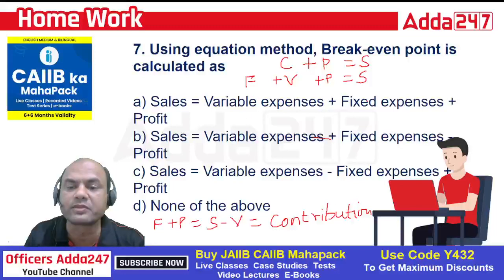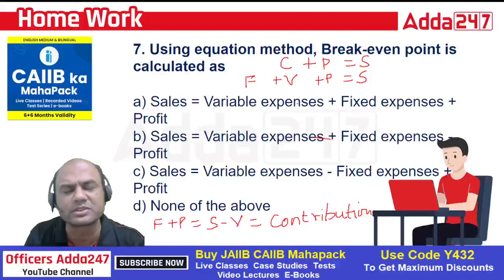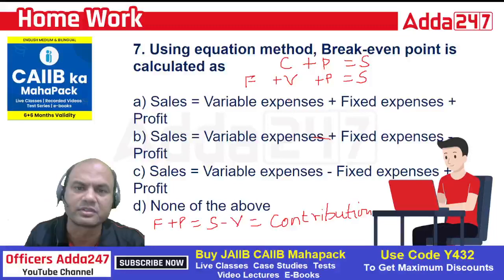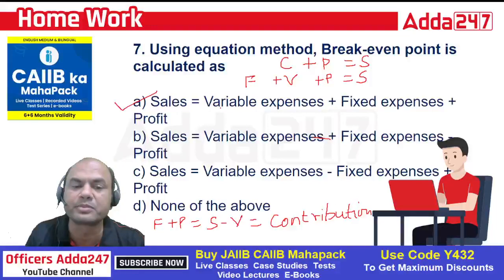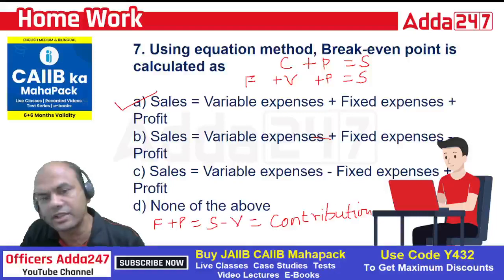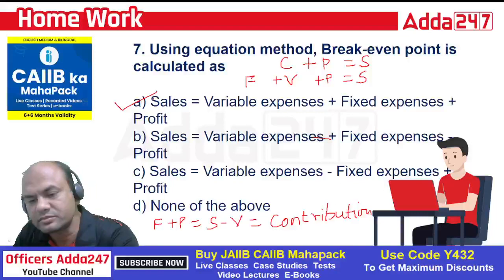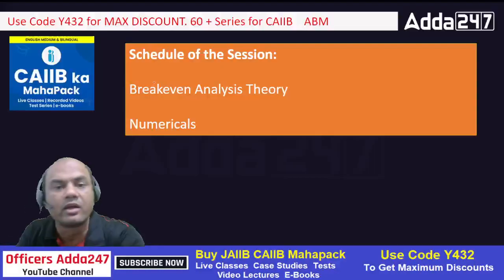Variable cost plus fixed cost plus profit equals to sales. Expense and cost mean one and the same thing — expense is the cost, and cost is the expense. So the correct answer is: variable plus fixed plus profit equals to sales.